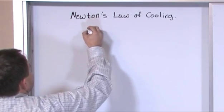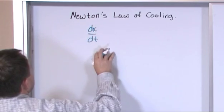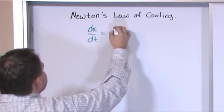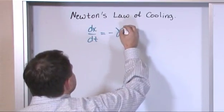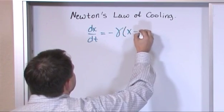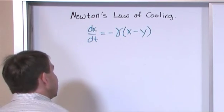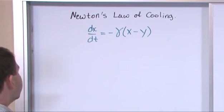What it is is the following differential equation: dx/dt is equal to negative gamma, that's the Greek letter gamma, times x minus y. Now, that means absolutely nothing unless I tell you what all this stuff is. And once I do that, I promise you it will not be a big deal.